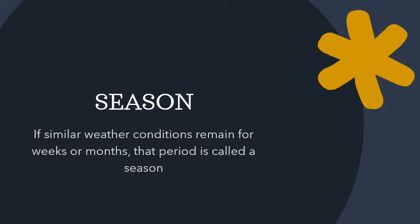That whole two months is considered a season. S-E-A-S-O-N, season. That is the difference between weather and season. Season means it is for a long period of time, whereas weather means in one day there can be many changes. But a season means the whole two months it will be sunny or raining.